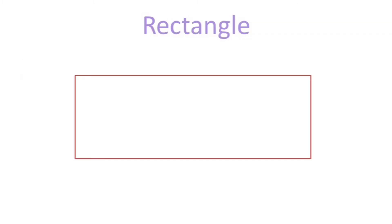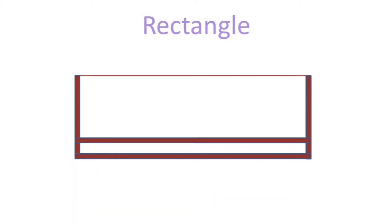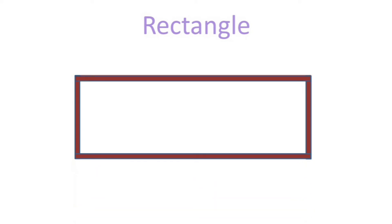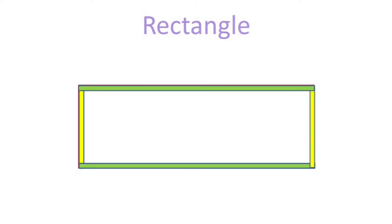This is a rectangle. A rectangle has four sides: one, two, three, four. Two of the sides are long and two of the sides are short.